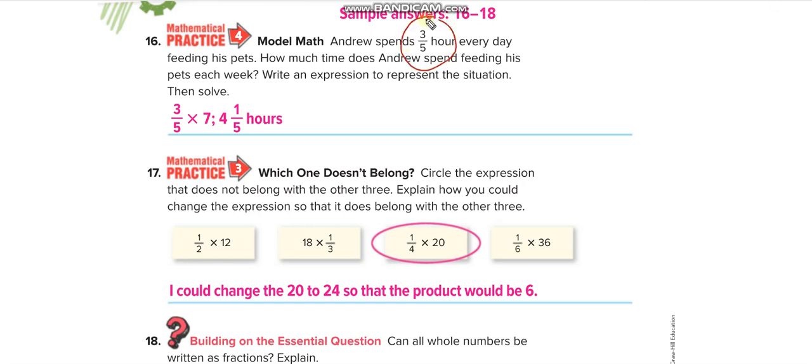3 over 5 hours every day, and how much in each week? So you have 7 days each week, so you multiply 3 over 5 with 7. And that is 4 whole, 1 over 5.